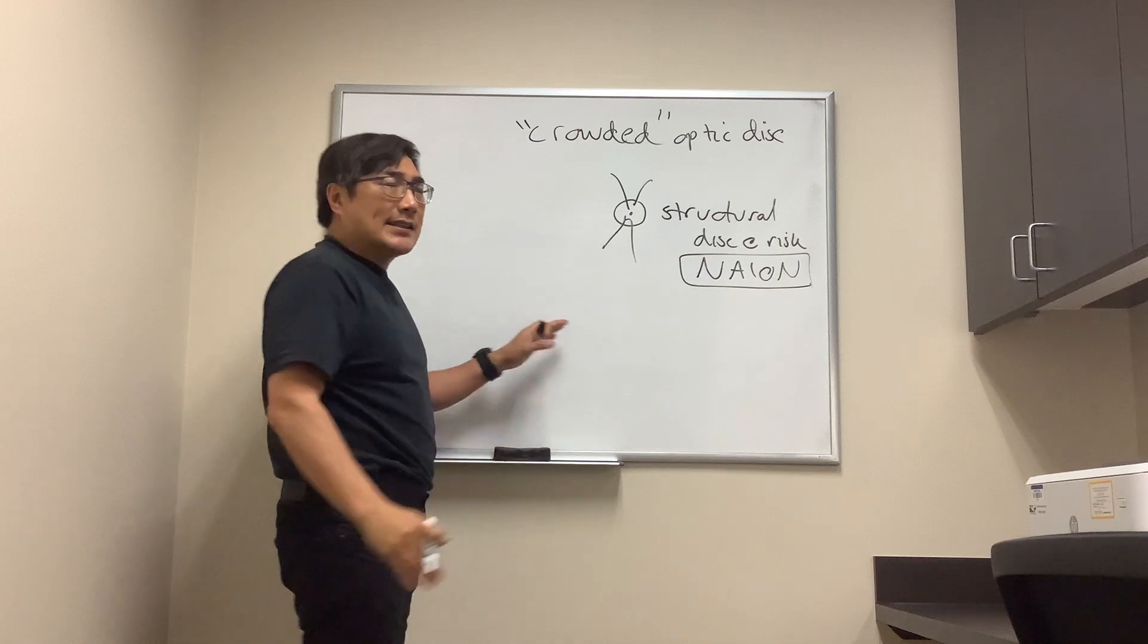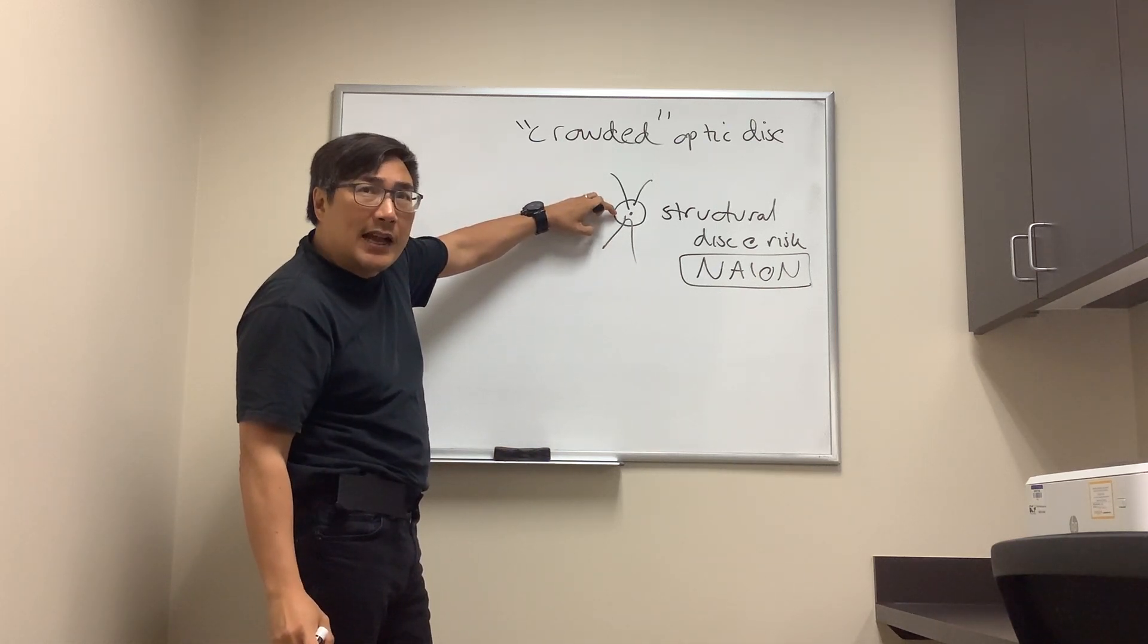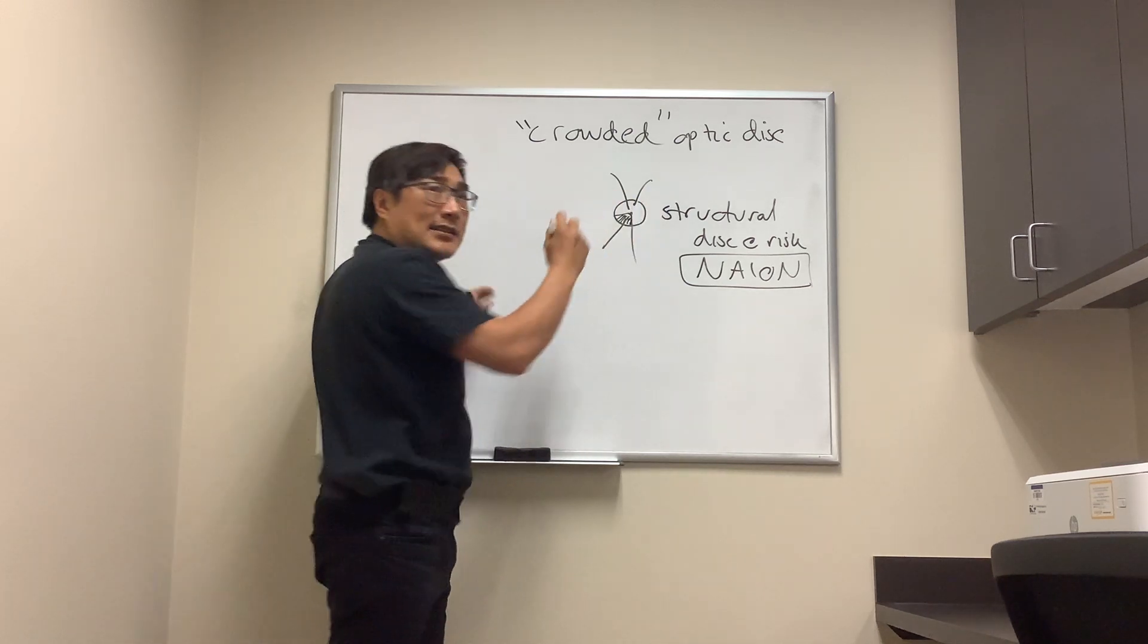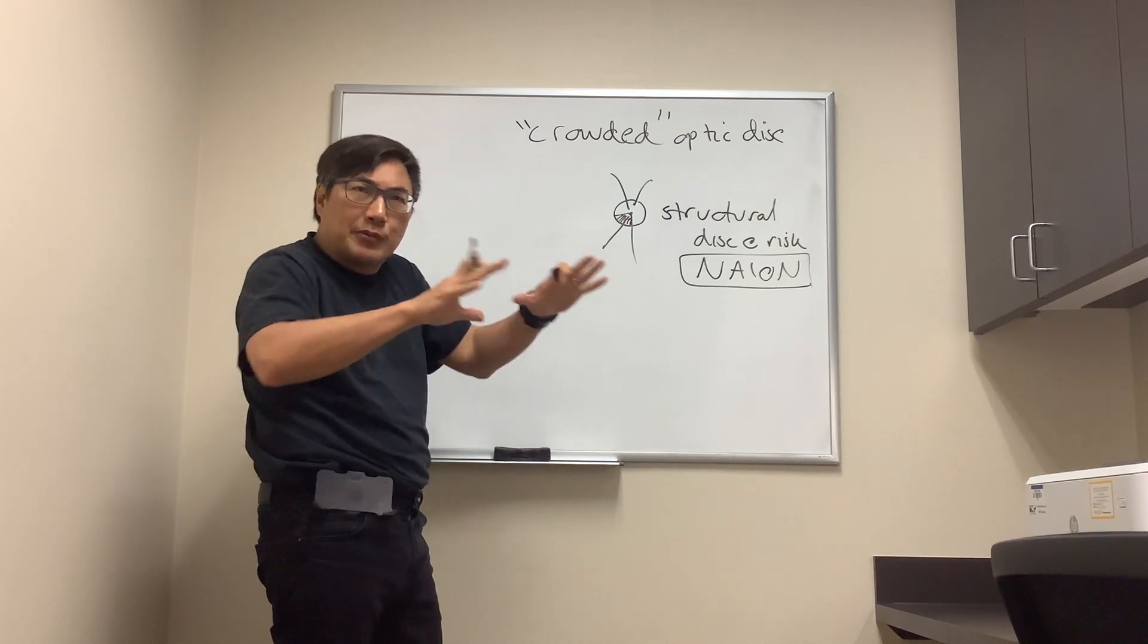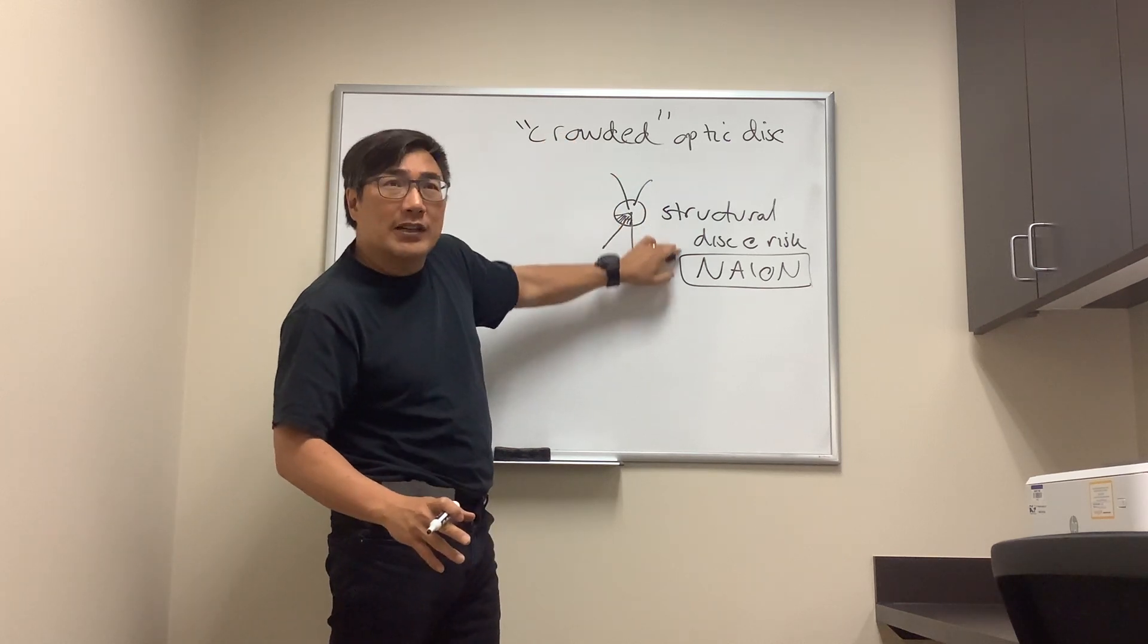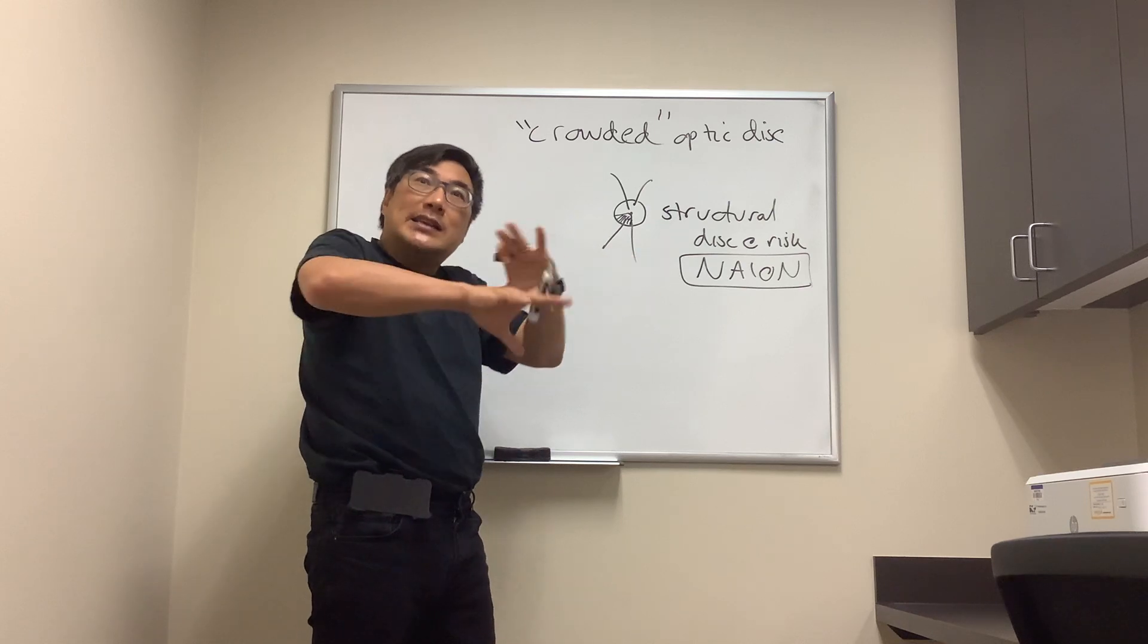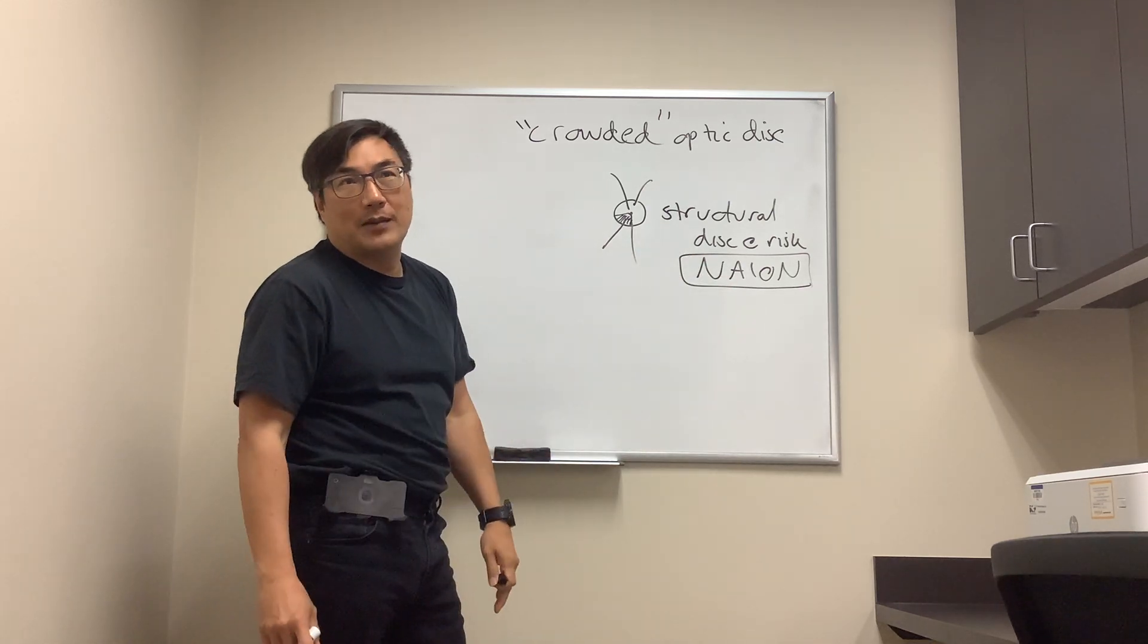The reason for this is that small vessel ischemia in the optic nerve head can cause segmental swelling, like sector edema. That produces an altitudinal field defect usually, but it can produce any field defect. Because you're in this tight space, the crowded optic disc is a disc at risk for the development of segmental ischemia, edema, and a vicious cycle that leads to non-arteritic anterior ischemic optic neuropathy.